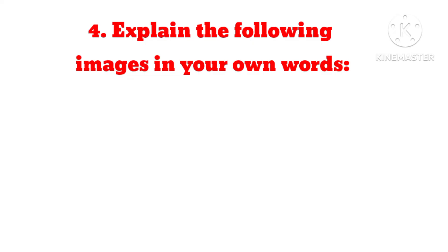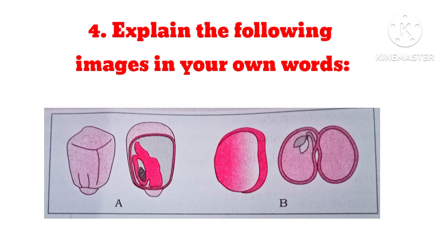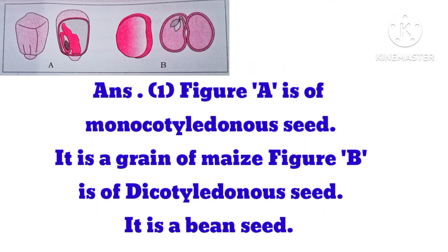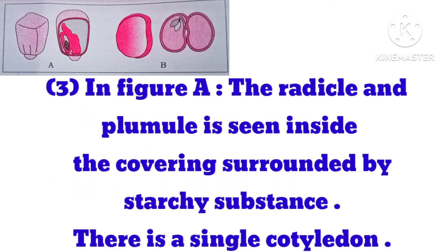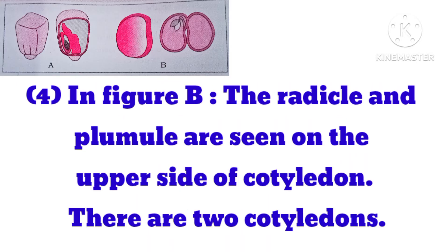Question 4: Explain the following images in your own words. Answer: 1. Figure A is of a monocotyledonous seed — it is a grain of maize. Figure B is of a dicotyledonous seed — it is a bean seed. 2. Each figure shows the entire seed or grain and a longitudinal section of the same. 3. In Figure A, the radicle and plumule are seen inside the covering, surrounded by starchy substance, with a single cotyledon. 4. In Figure B, the radicle and plumule are seen on the upper side of the cotyledon, and there are two cotyledons.